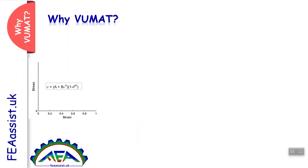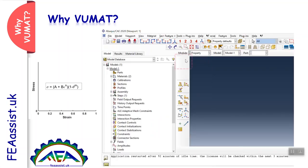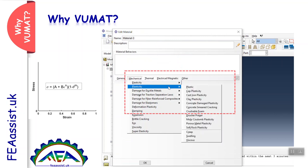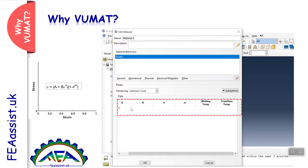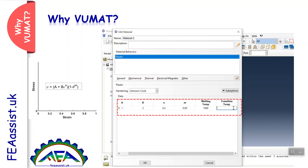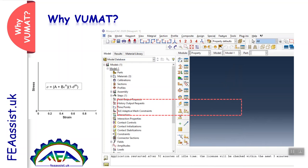If you want to solve your problem more precisely, you need to have the constitutive behavior or constitutive equation of your material. If you have an equation and the equation is included in Abaqus, you can go to the Abaqus property, mechanical section, and instead of entering points define the behavior — for example, the Johnson-Cook model. You can enter the parameters and constants, and Abaqus will solve your problem at all points based on this equation. This is more precise because you have an equation.